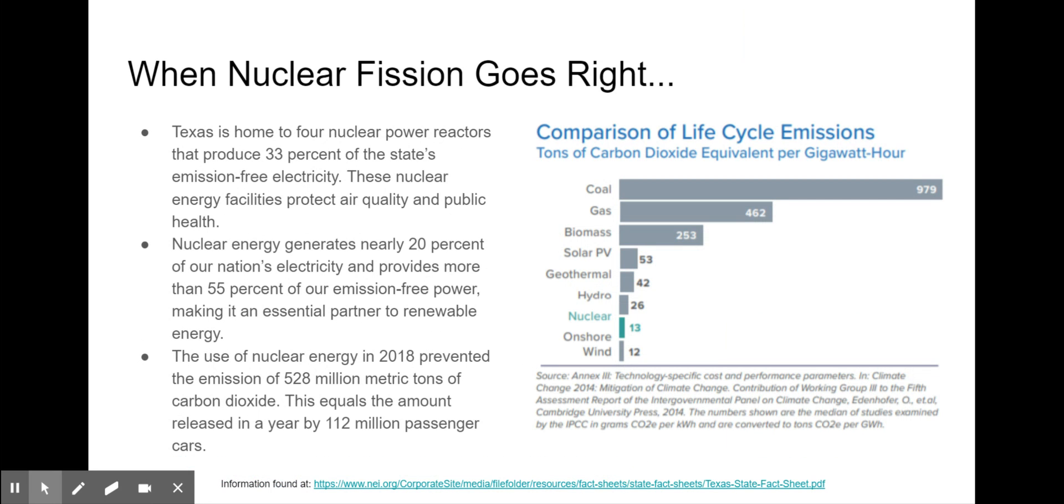But when it goes right, here in Texas, you have two of those power plants that produce 33 percent of the state's emission-free electricity. That means there are no carbon dioxide or monoxide being released from nuclear power. Nuclear energy generates nearly 20 percent of our nation's electricity and provides more than 55 percent of our emission-free power.